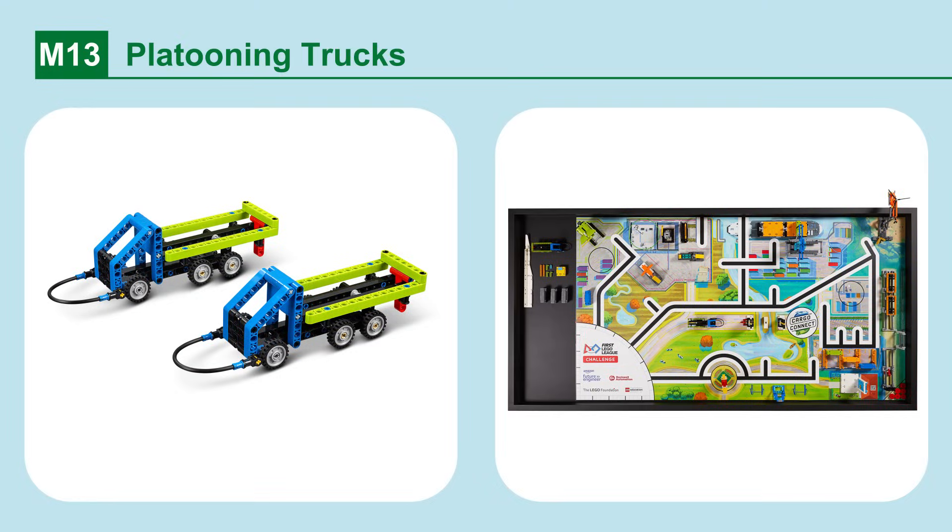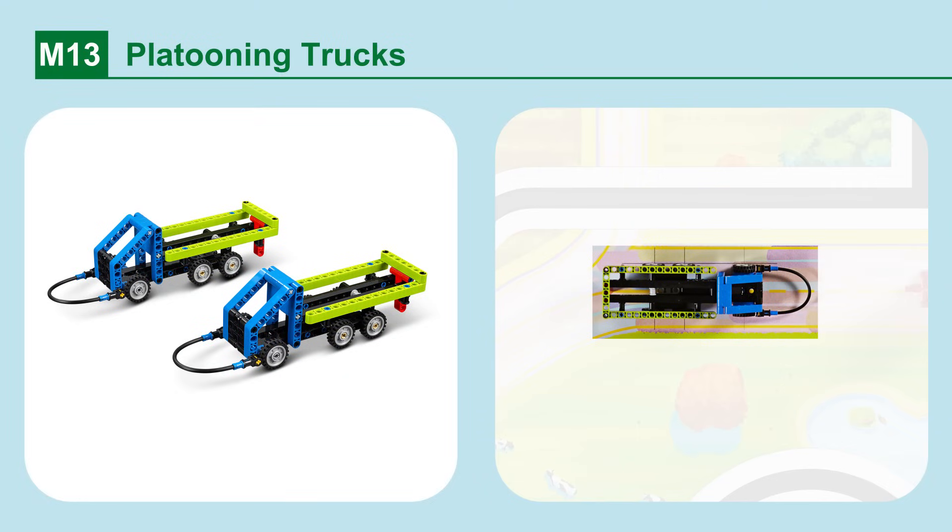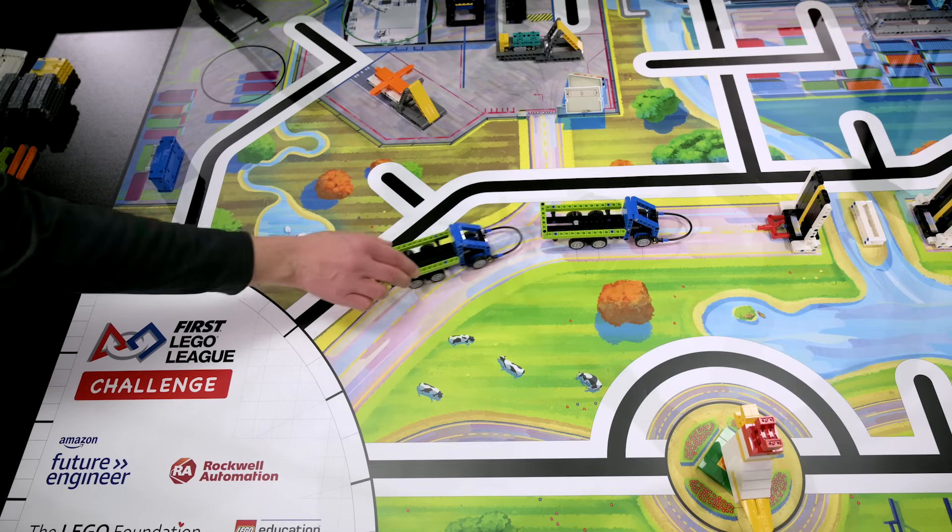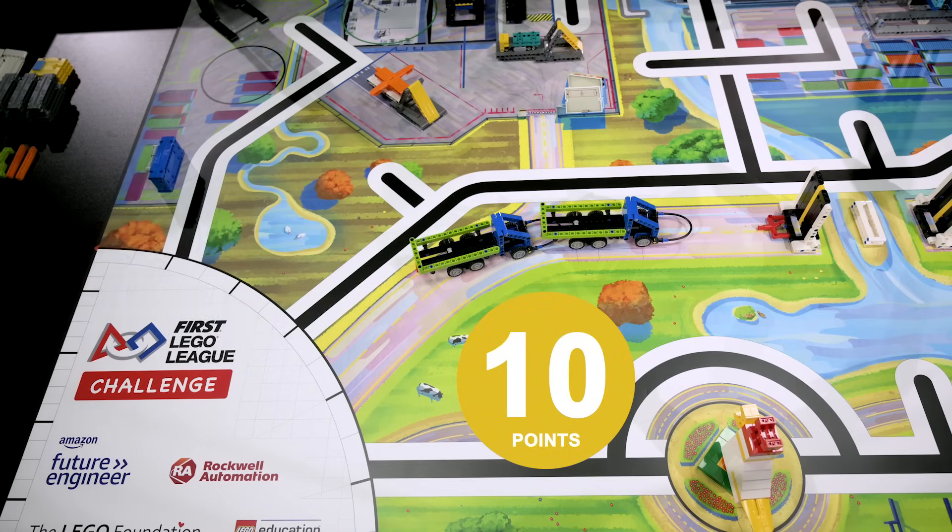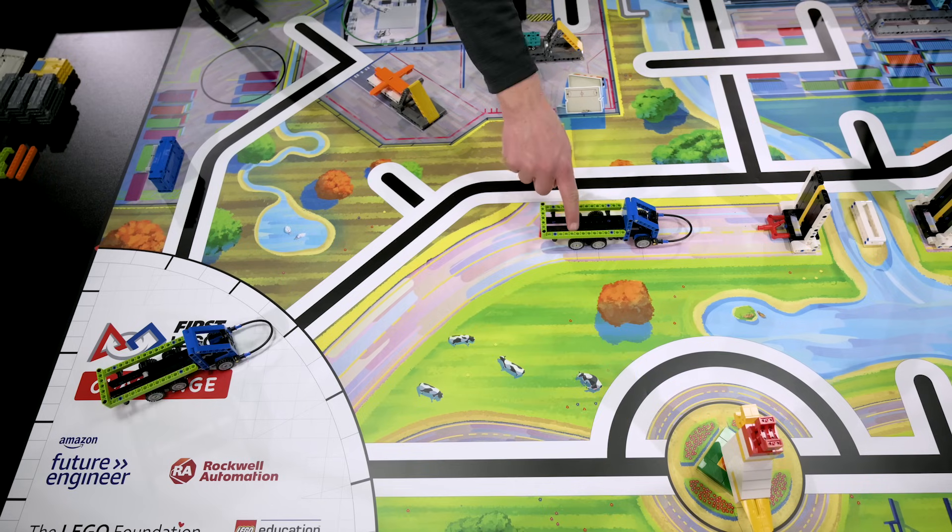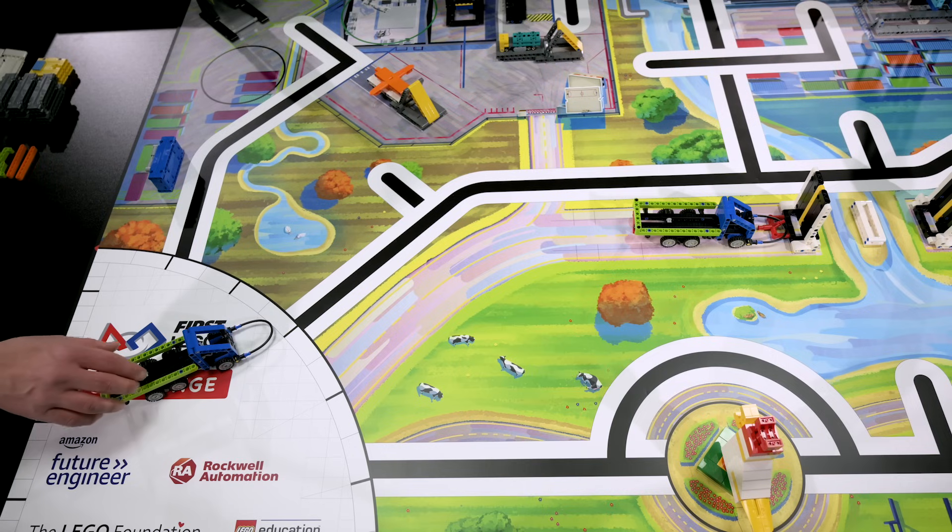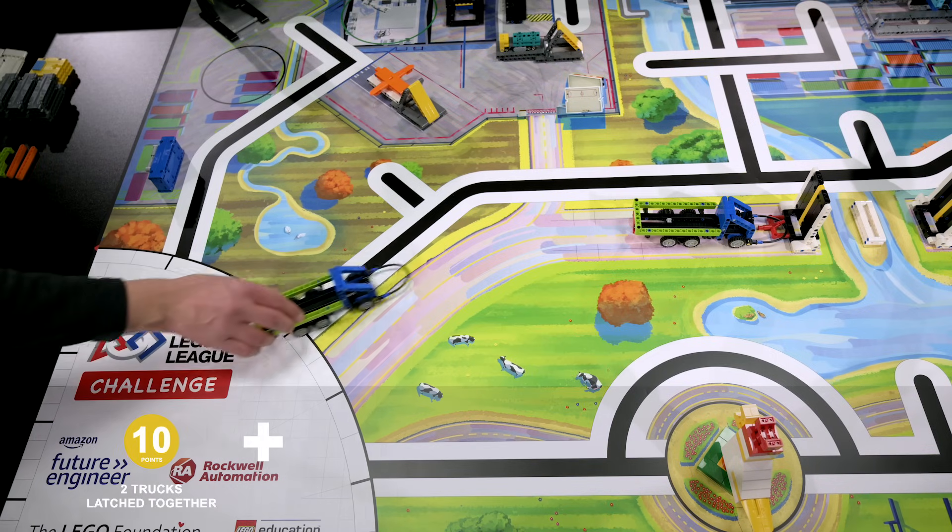Mission 13. Platooning trucks. Latch the platooning trucks together outside home and also latch them to the bridge. If both platooning trucks are latched together completely outside home. If a platooning truck is latched to the bridge. A bonus is scored when both tasks are completed.